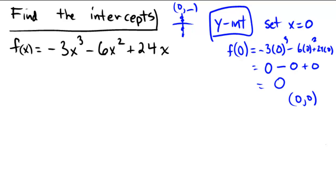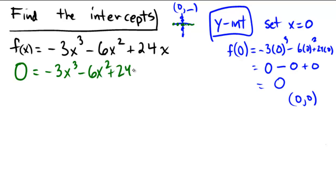To find the x-intercept, instead of setting x equal to zero as we do for the y-intercept, we set f(x) equal to zero. So we're going to set y equal to zero to figure out where we hit the x-axis. That gives us the equation: zero equals negative three x cubed minus six x squared plus 24x.